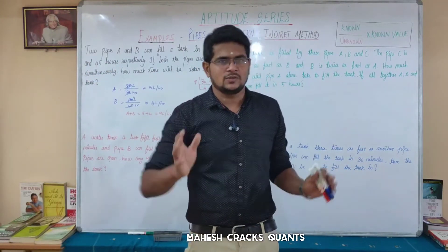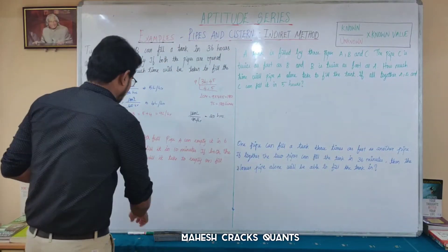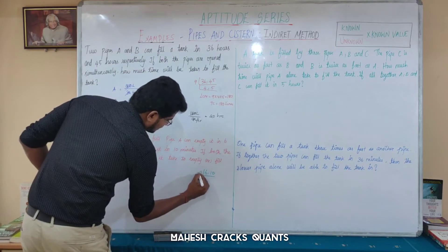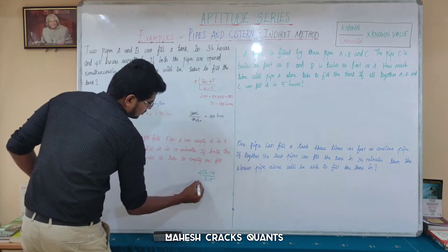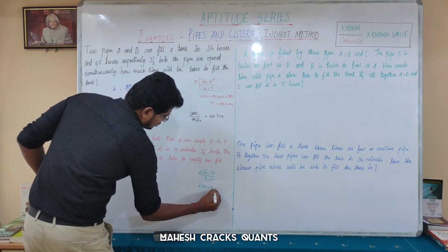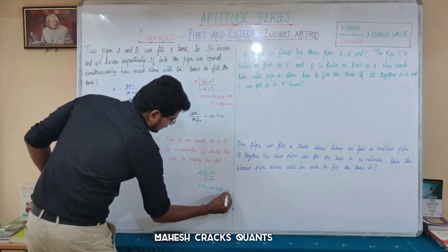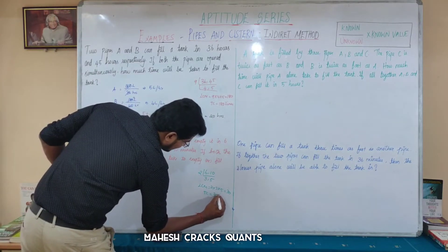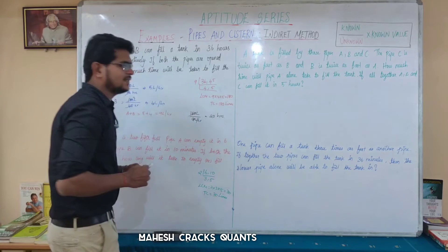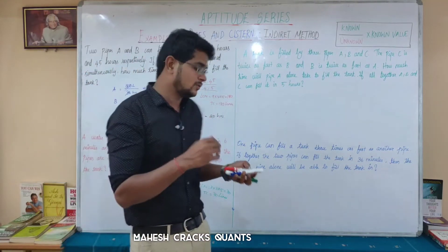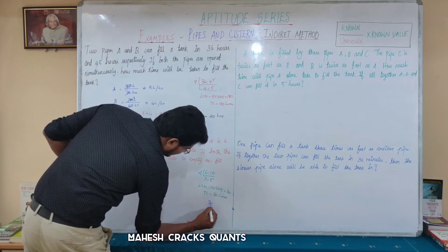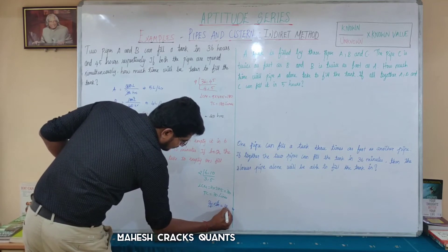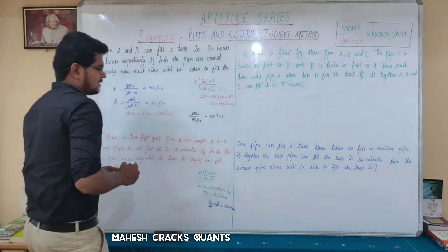First, find the LCM of 6 and 10. The common factor is 2, so LCM = 2 × 3 × 5 = 30. Total capacity is 30 litres. The tank is already two-fifths full: two-fifths of 30 = 12 litres already filled.